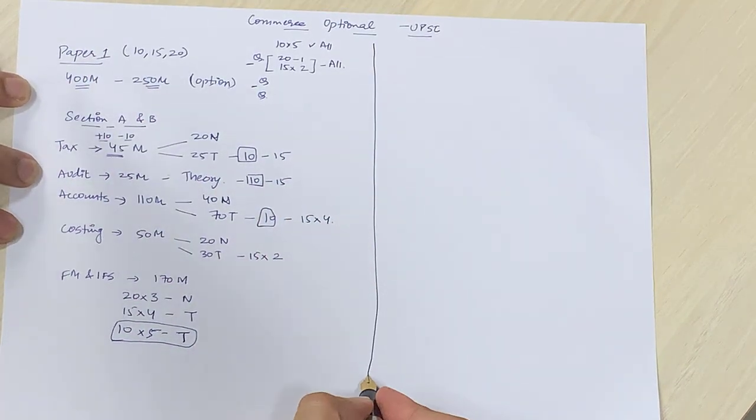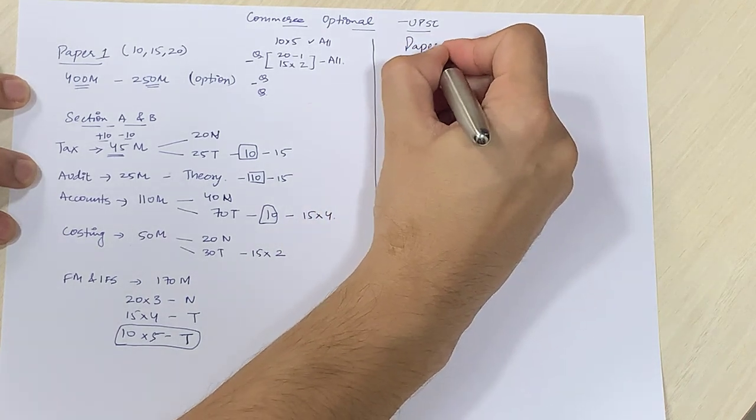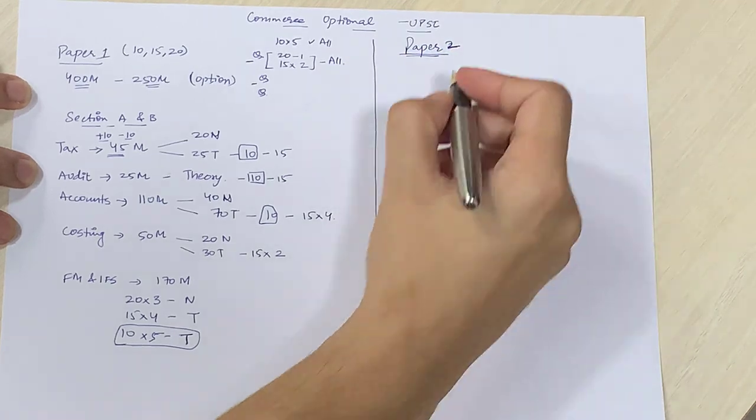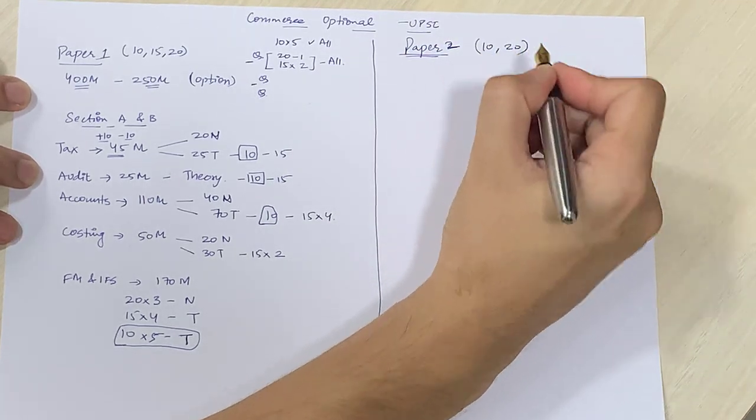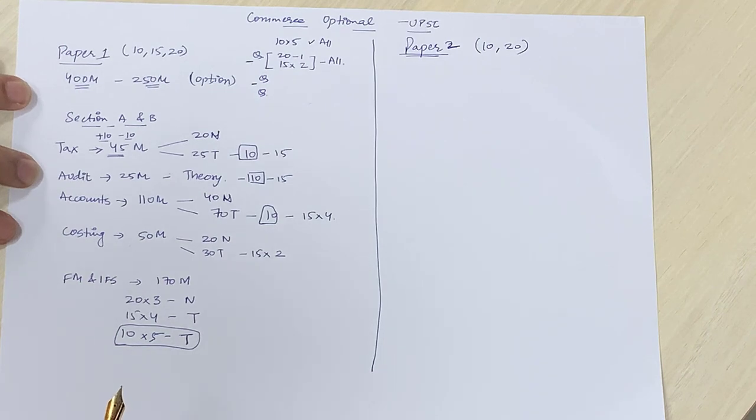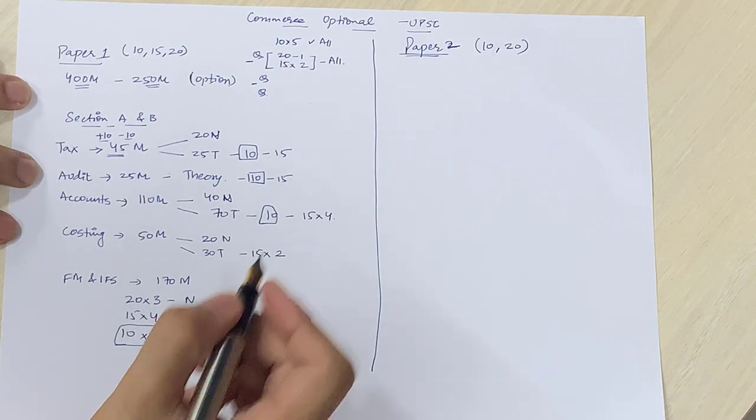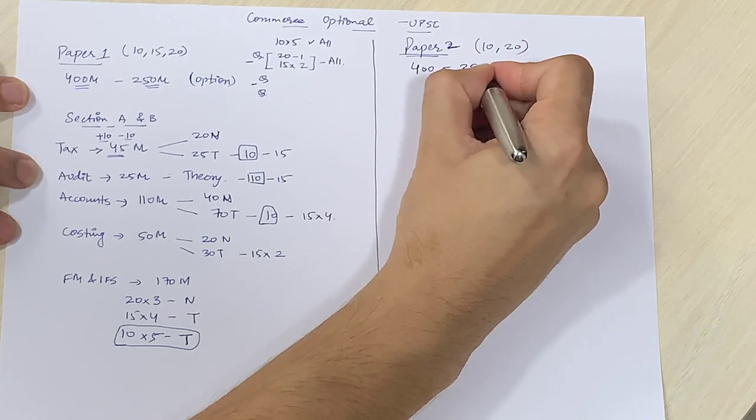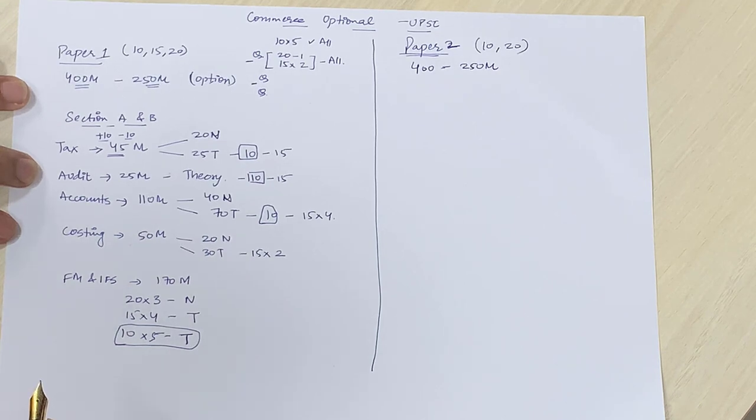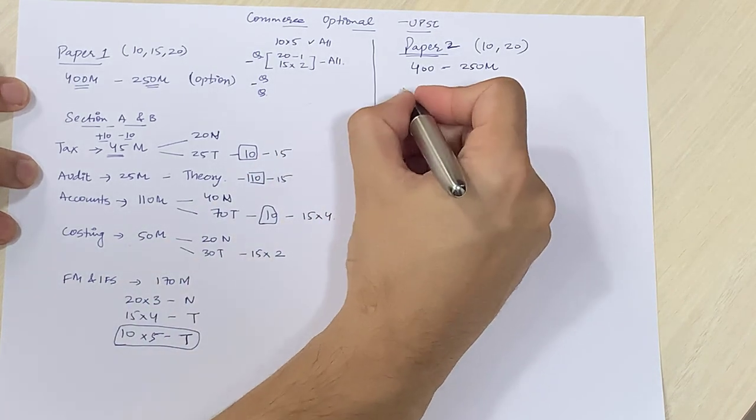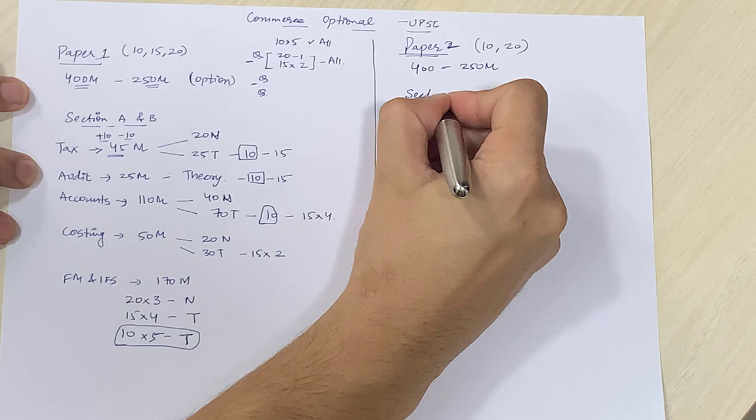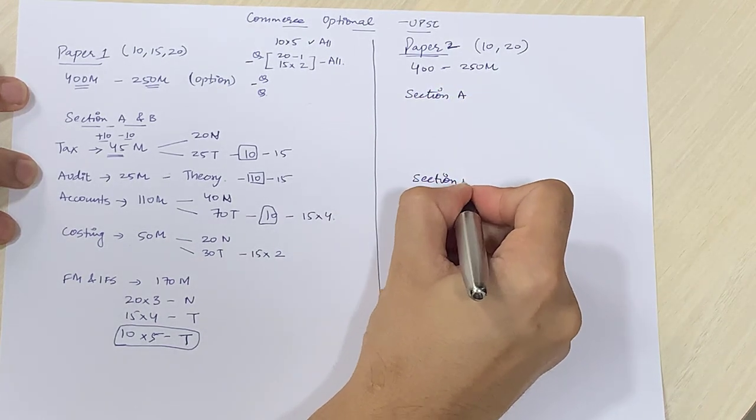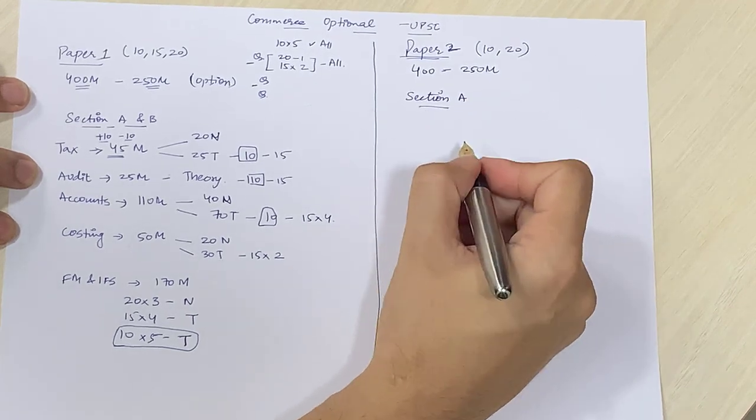Now let's draw a line and come to paper 2. Paper 2 mein break up kaafi zyada asan hain. Aur kaafi clear hain. Aur wahan ki preparation bhi thodhi easy rheti hain. Yehaan per you will see that there are only 10 markers and 20 markers being asked in the exam. 15 markers nahin puchhe jate. Again there are questions worth 400 marks. Out of which 250 marks worth of questions you have to attempt. Here we can divide based upon both sections as well as topics.